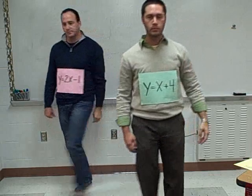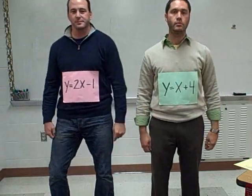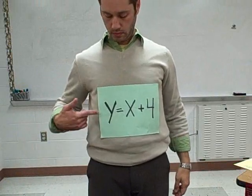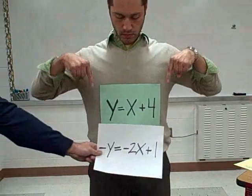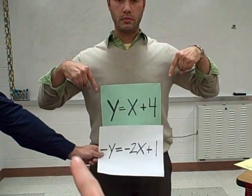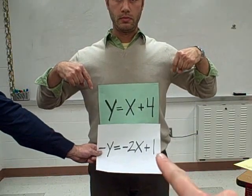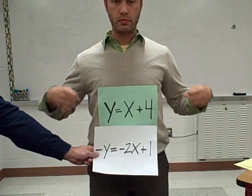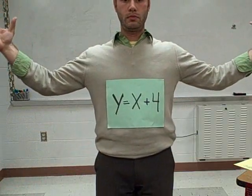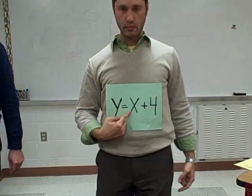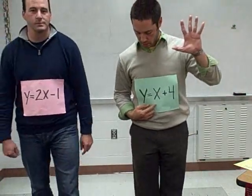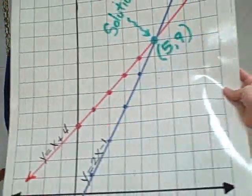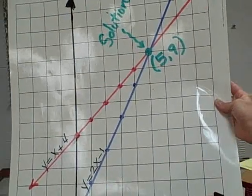y equals x plus 4 and y equals 2x minus 1. Line up the variables and multiply one equation: y equals x plus 4 and y equals 2x minus 1. So when we add the two equations, one variable goes to zero. Then we solve for x and use some substitution — 5 comma 9 is the solution.